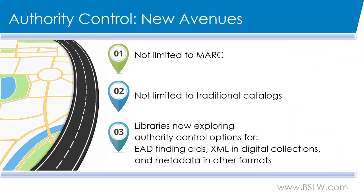When considering authority control and the goals of authority control, one really needs to also consider the state of other collections in the library. Authority control is no longer limited to just MARC or traditional bibliographic information. More and more libraries are now exploring authority control options for EAD finding aids, XML metadata for digital collections, and other collections of various formats. Many institutions are aware that the way names and subjects are entered in this other metadata is sometimes far more inconsistent than their bibliographic data, especially if the metadata is stored in a shared repository and each institution has its own policies for entering headings.